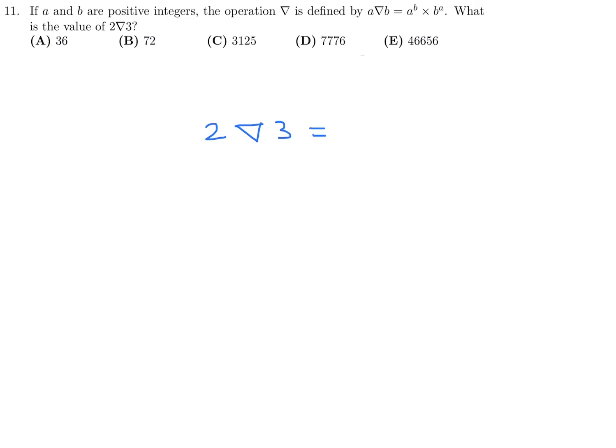According to the definition, it would be 2 to the power of 3 multiplied by 3 to the power of 2. 2 to the power of 3 is 8, 3 to the power of 2 is 9. 8 times 9 is 72. Number 11, the answer is B.